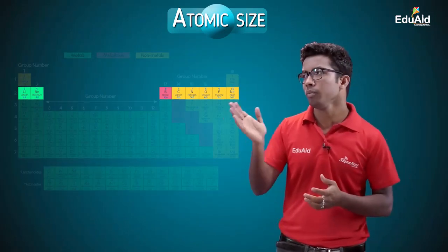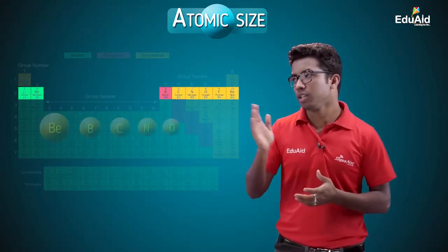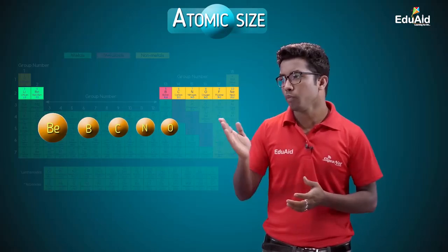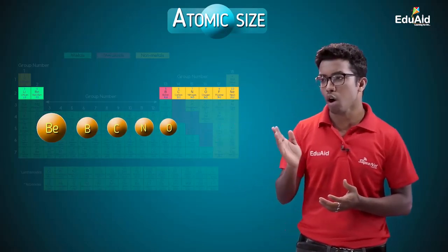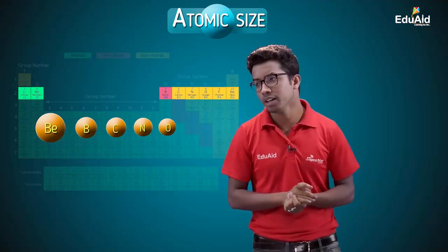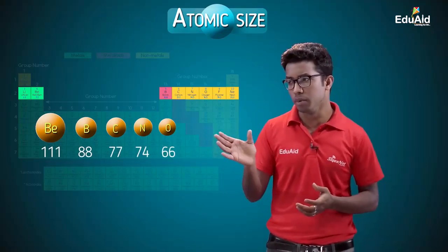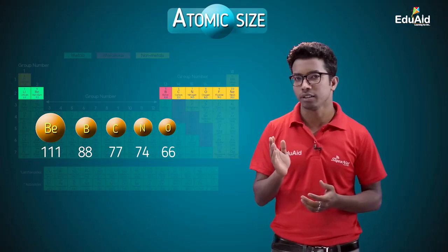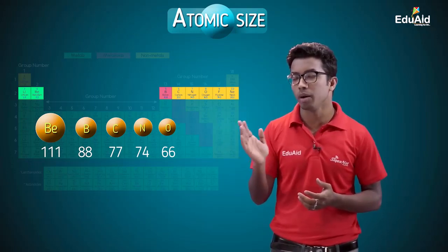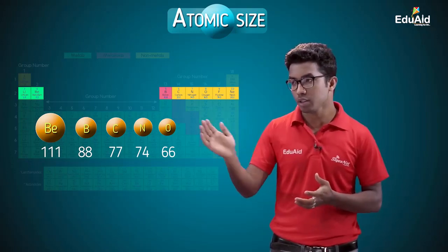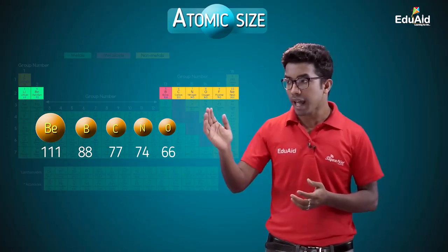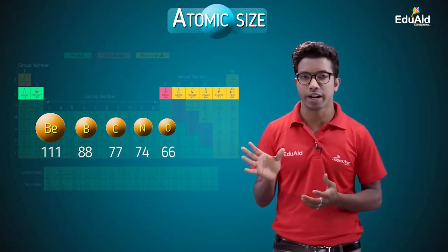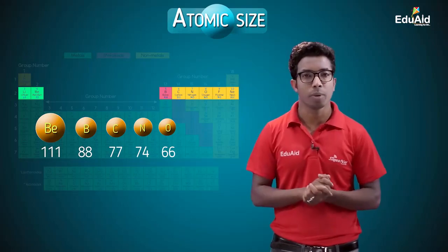Let us look at some atoms from period two: lithium, beryllium, boron, carbon, nitrogen, oxygen. Looking at their atomic sizes, the numbers are decreasing from one element to the next. This confirms that atomic size decreases across a period — that is the trend.